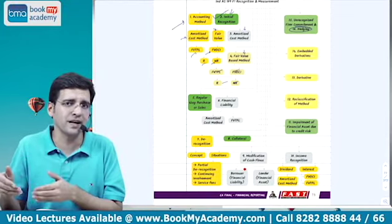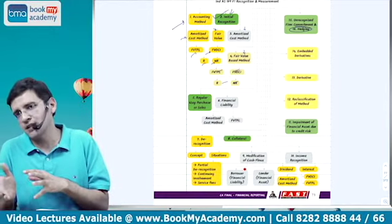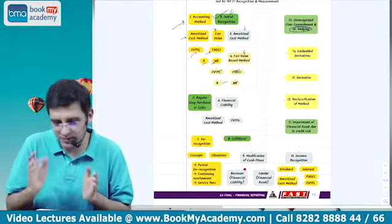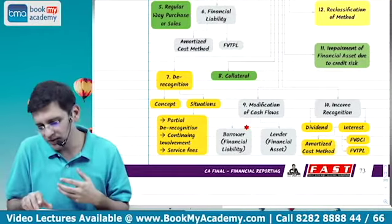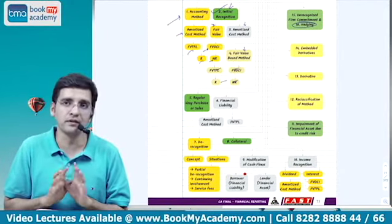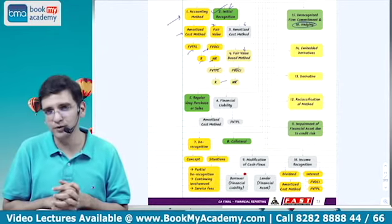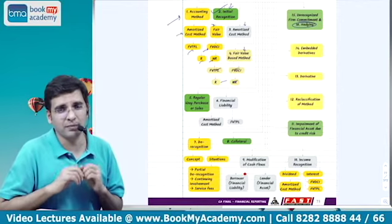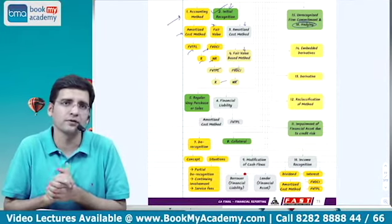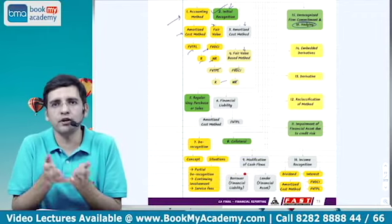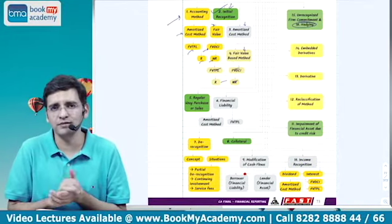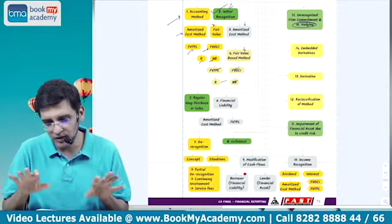Financial liability is primarily cost-based. Once we study these methods, we will simultaneously study how to account for financial liabilities as well. That will give you a complete idea of how to apply these particular methods. Then we will have to come to special topics — derecognition, collaterals, modification of cash flows, income recognition, and embedded derivatives. Embedded derivatives are a topic where students really need some inputs because there is confusion between compound financial instruments, derivatives, and embedded derivatives. Compound financial instrument concept is only for the issuer, not for the investor, whereas embedded derivatives depend on the nature of the instrument. I will go with the concepts and logics throughout.